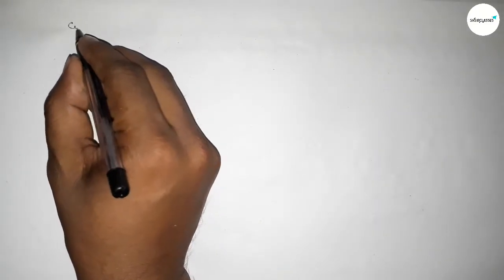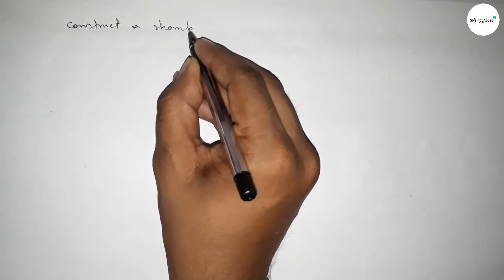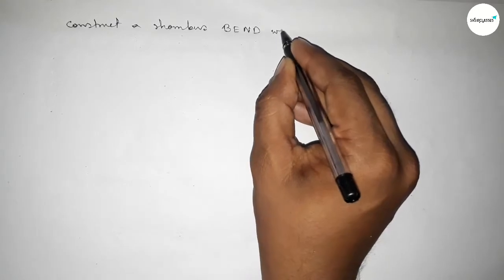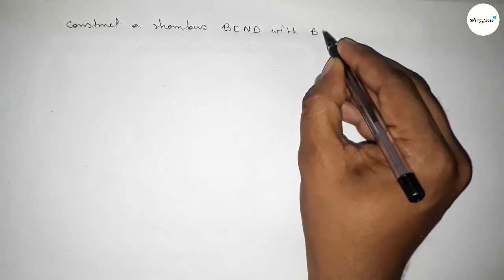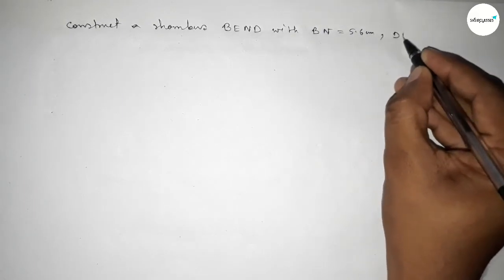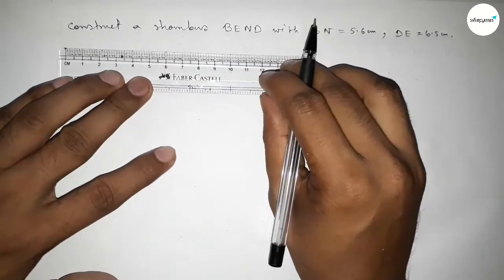Hi everyone, welcome to SISR classes. Today in this video, we have to construct a rhombus BEND with given two diagonals: BN equal to 5.6 centimeters and diagonal DE equal to 6.5 centimeters. Let's start the video.